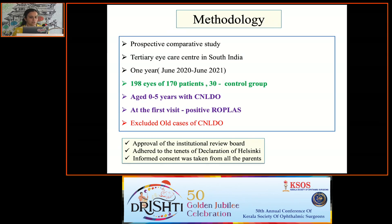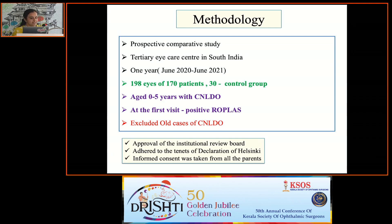This is a prospective study done in a tertiary eye care centre in South India. We included 198 eyes of 170 patients in the age group of 0 to 5 years with CNLDO. We included children during their first visit who were regurgitation test positive, and excluded all previously treated cases. Thirty children coming with other ocular complaints in the same age group were included as the control group.